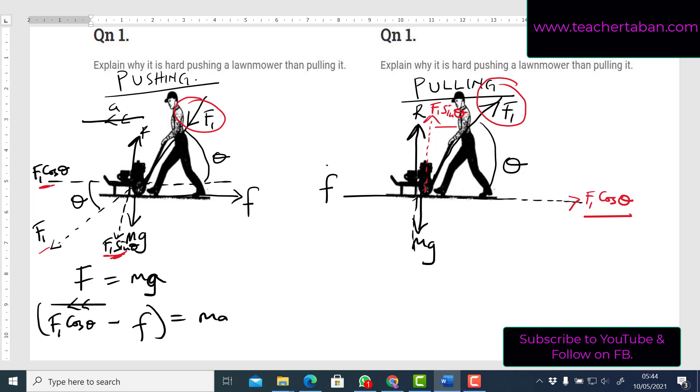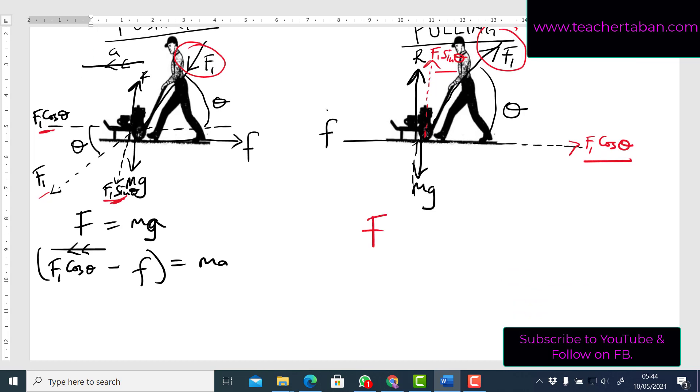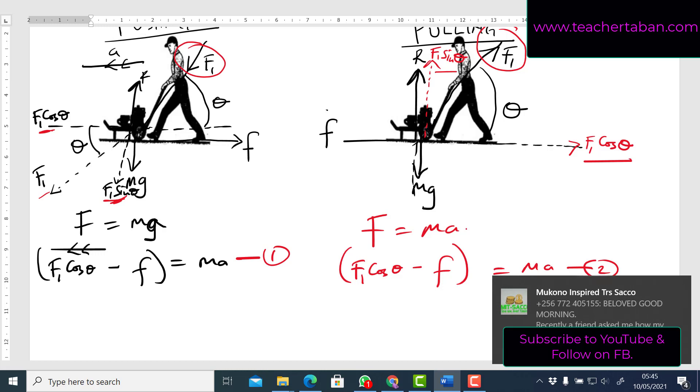So if I try to use this second law of motion that F equals ma, I'll be having my resultant force as F1 cos theta minus the frictional force, everything is equal to the mass and the acceleration. So you can see that in both equation 1 and equation 2, the expressions are the same. So what causes one side that work done is higher than the other? Why is it harder in either pushing or pulling? Let's find out and we decide which one is harder than the other.